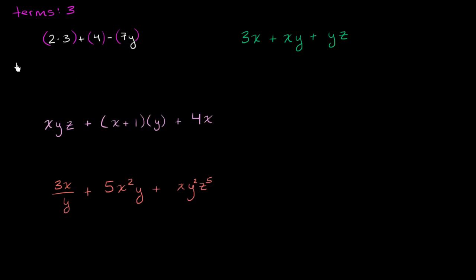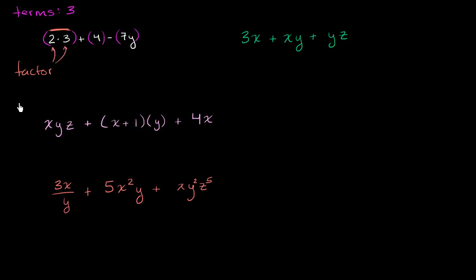Now let's think about the term 'factor.' When people are talking about a factor, especially in terms of an expression, they're talking about the things that are getting multiplied in each term. So for example, if you said, 'what are the factors of the first term?' — the first term refers to two times three. And there are two factors: there's a two and a three, and they are being multiplied by each other. So here you have two factors in the first term.